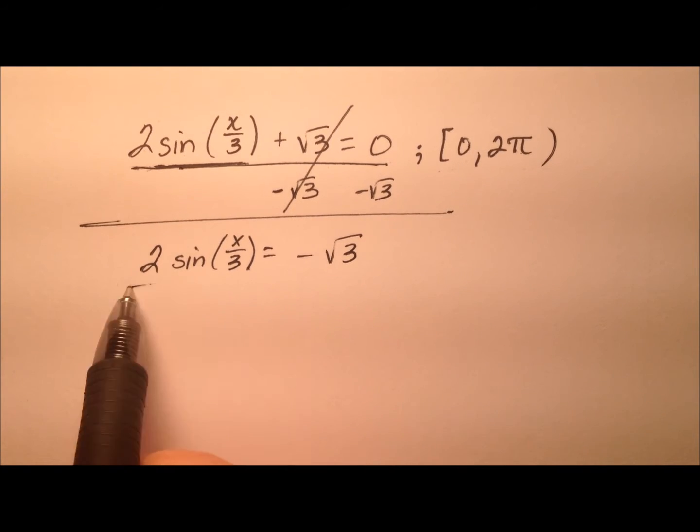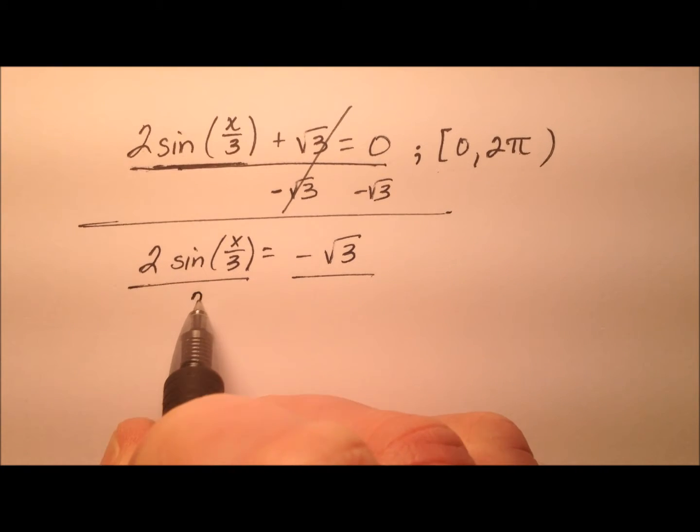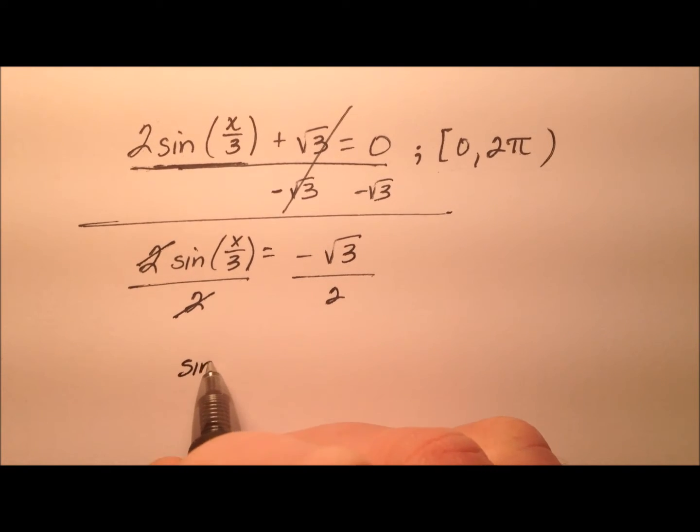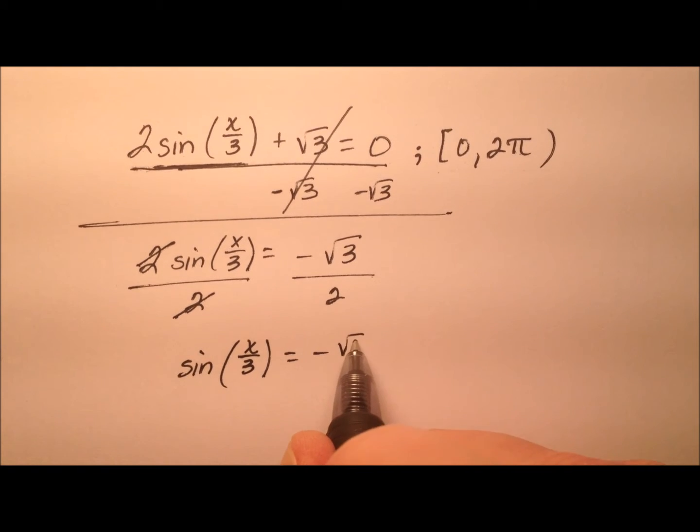And to finish getting the sine by itself, let's divide both sides by 2. So I will have the sine of x over 3 equals negative square root of 3 over 2.